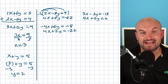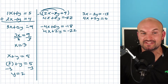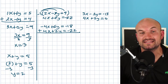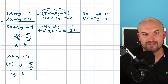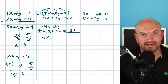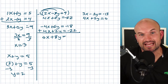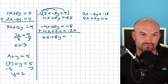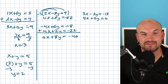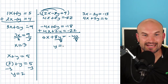Now you can see we've achieved exactly what I was looking for — I have the exact same coefficients, one being positive and one being negative: negative 4 and positive 4. So now I can add the two equations. Adding everything vertically: negative 4X plus 4X is zero X — that got eliminated. 6Y plus 2Y is positive 8Y. Then we have negative 18 plus negative 22. If you owe me $18 today and $22 tomorrow, you owe me a total of negative $40. So I can divide by 8 on both sides and get Y equals negative 5.